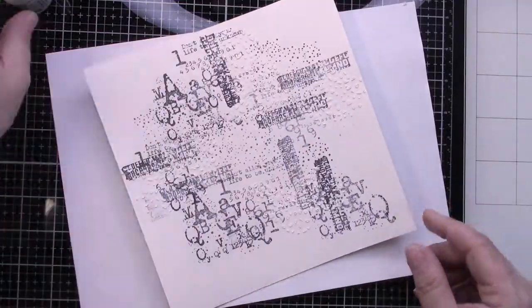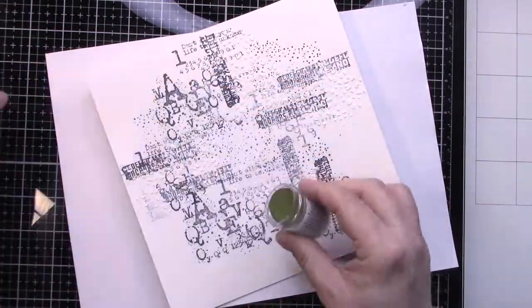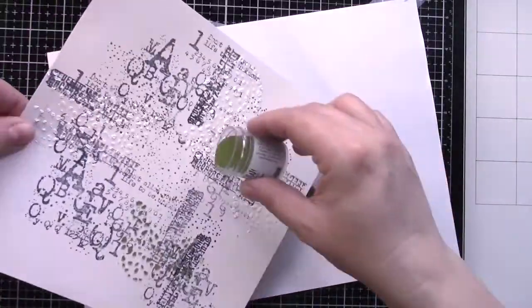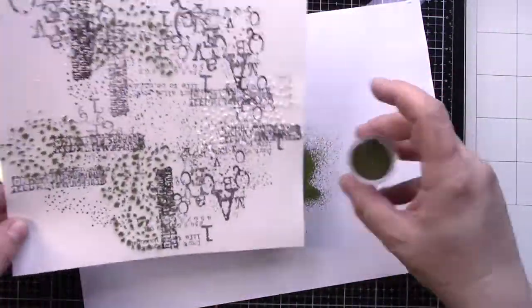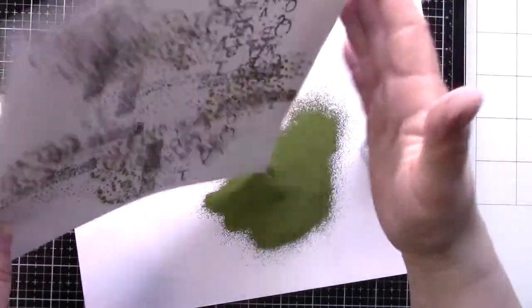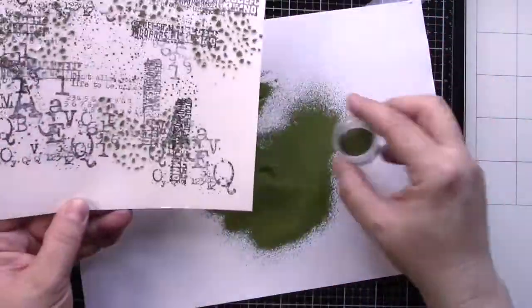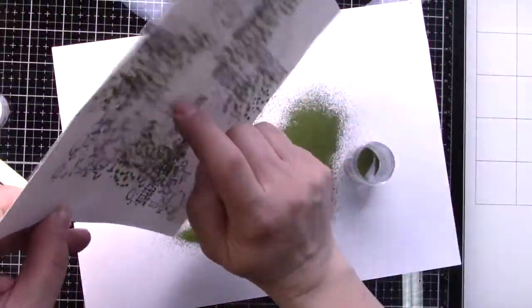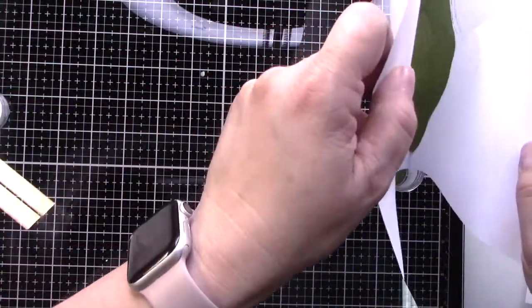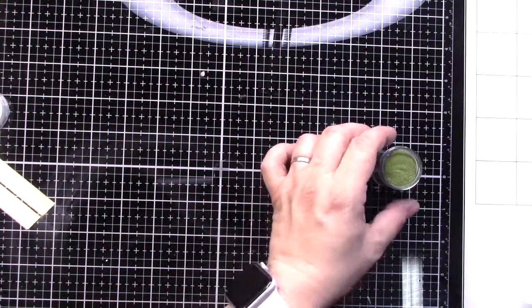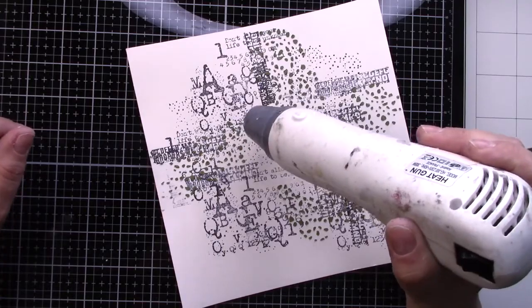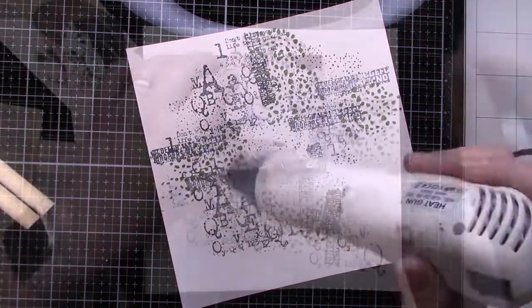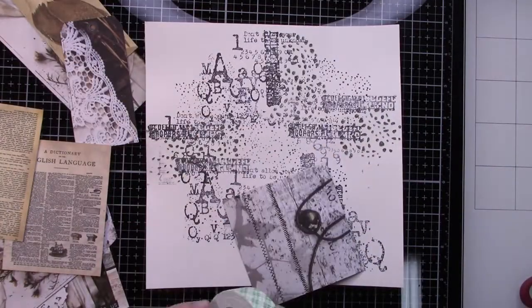I applied paper paste by Prima Marketing and here is awesome embossing powder by Wow Embossing. I'm applying it over the stencil areas and I will heat set it up. It adds interest to background and it's really nice structure. I love heat embossing over any kind of paste. I think it's nice and it works great.